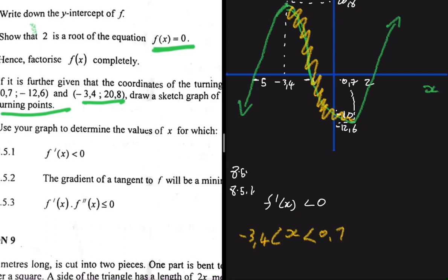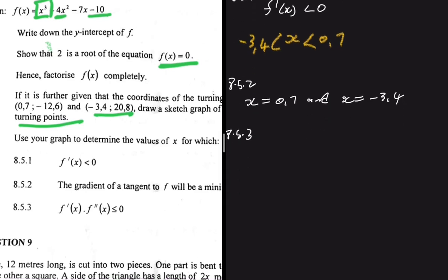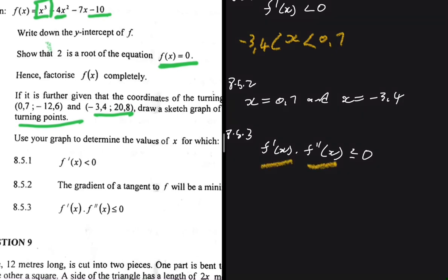The last question, 8.5.3, asks for values of x for which f'(x) multiplied by f''(x) — the second derivative — is less than or equal to zero. I'm very interested in how you guys solved this question. Please let me know in the comments.